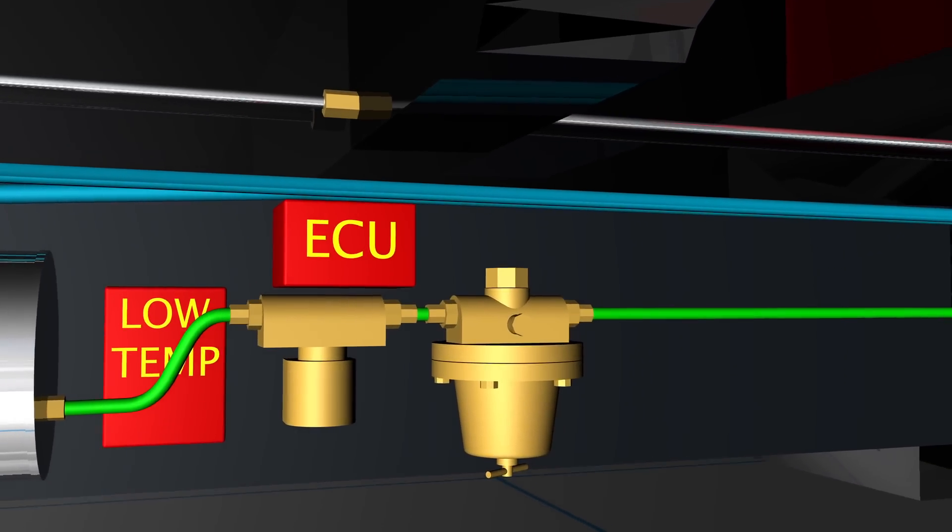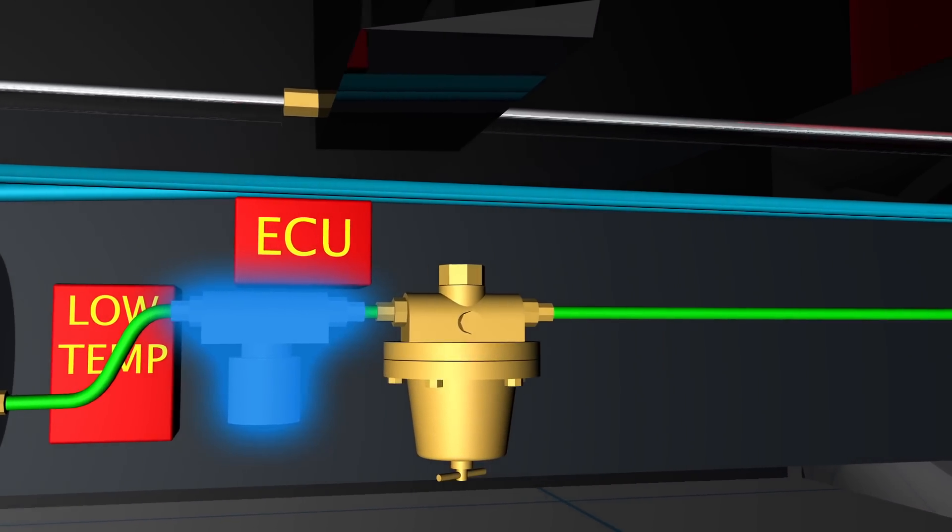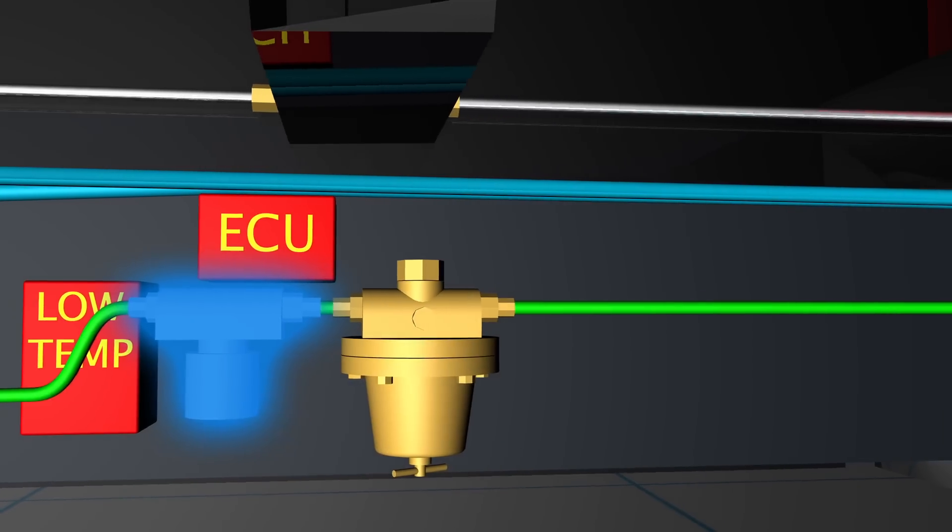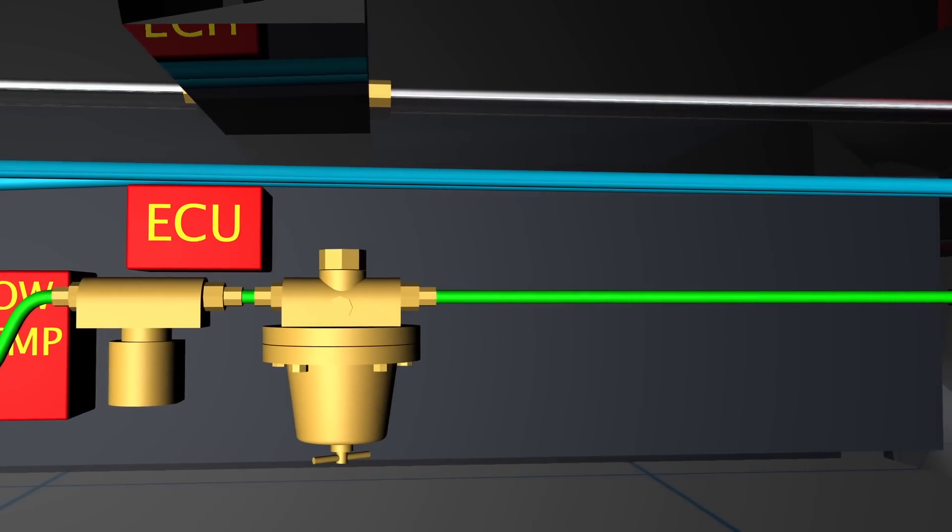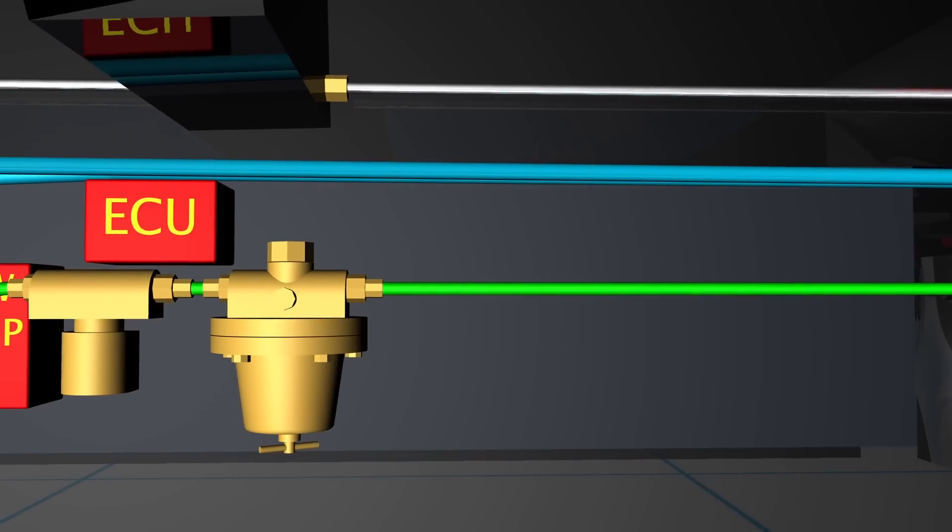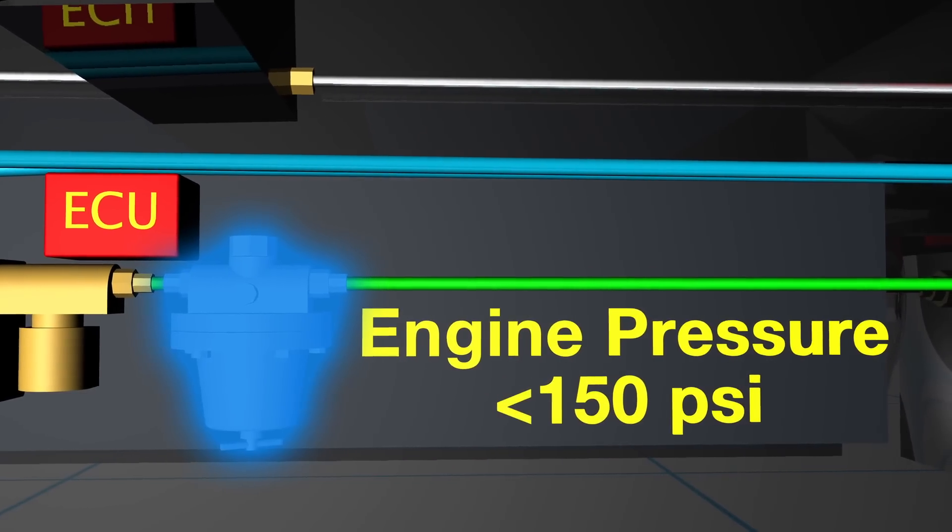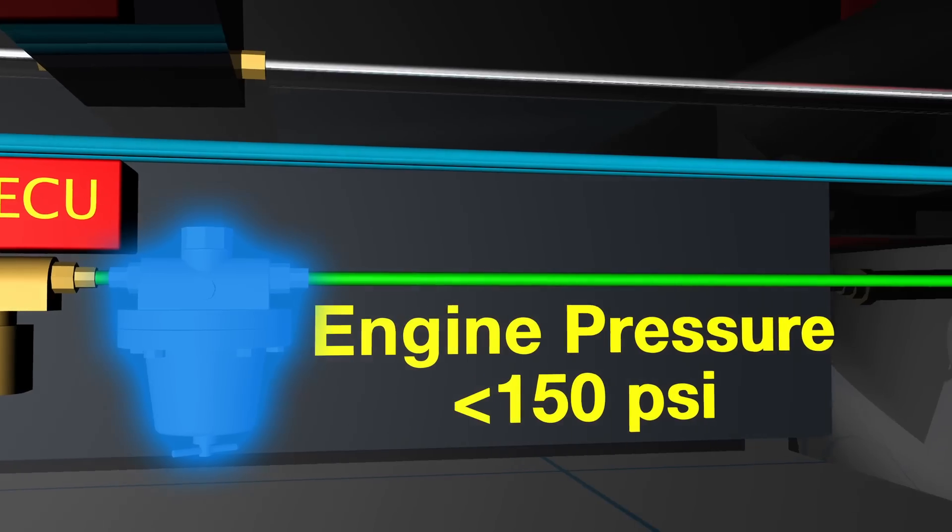LNG systems have an automatic shutoff valve. Only when the key switch is turned on will fuel flow to the engine for operation. The pressure of the gas exiting the heat exchanger going to the engine is limited by the overpressure regulator not to exceed 150 psi.